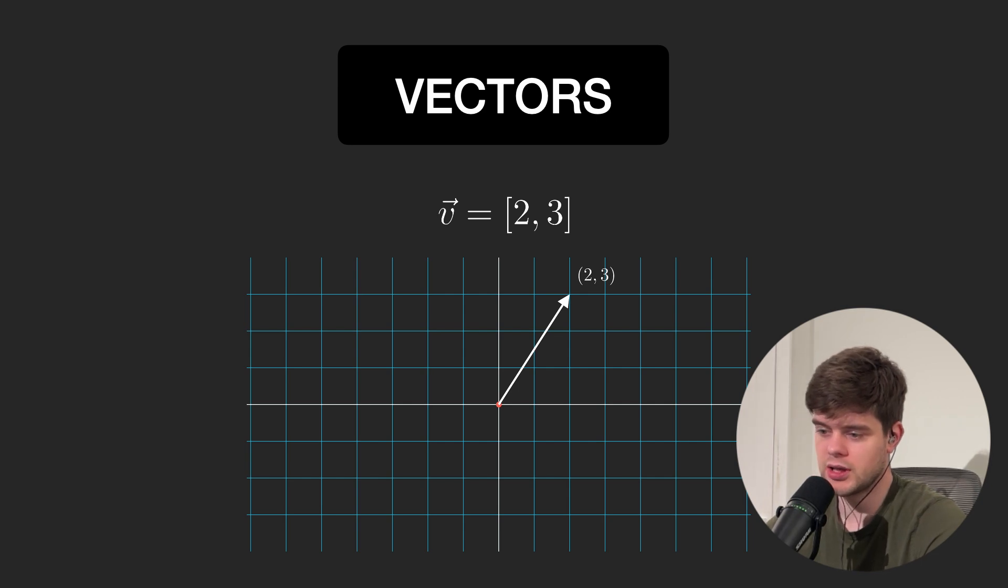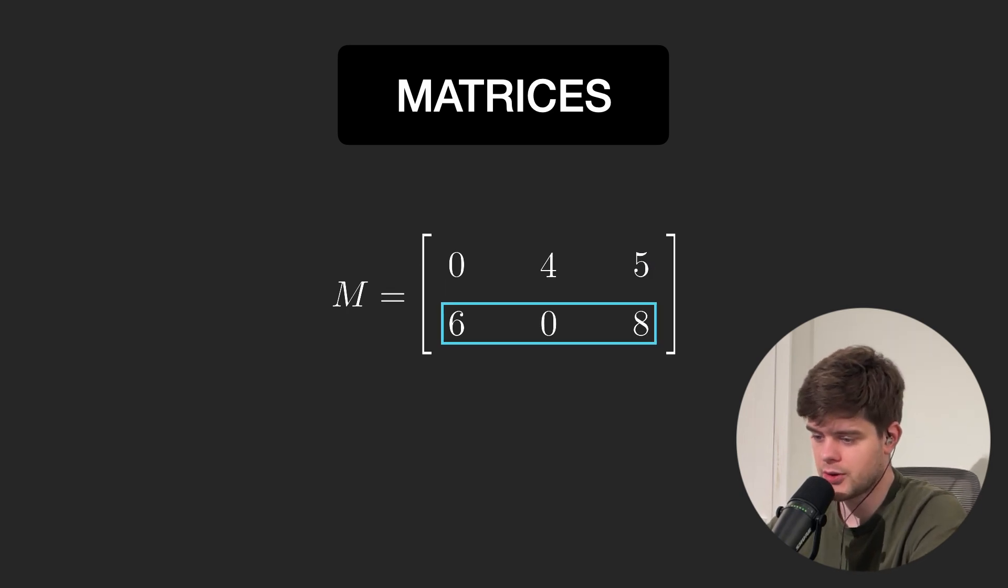Now a matrix is a rectangular array of elements, usually numbers, arranged in rows and columns. Rectangular means they're two-dimensional, so the dimensions are given by the number of rows and columns.